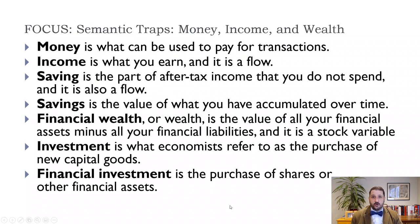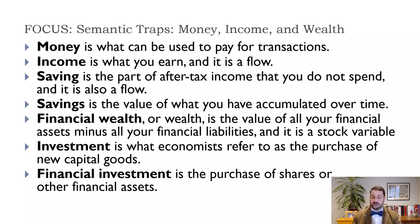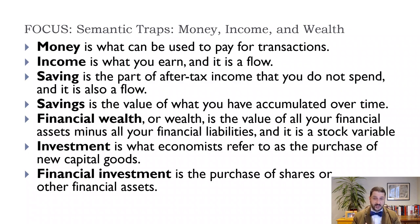We need to be careful about how we use terms. "Money" in this context means what you can use to pay for transactions — it's liquid, so it's either cash or checking accounts. "Income" is what you earn: it's a flow variable, measured over a period of time such as a week, month, or year. A stock variable, by contrast, is measured at a specific point in time — wealth is a stock variable. Saving is part of your wealth, built through the propensity to save, which is one minus the propensity to consume (1 - c1).